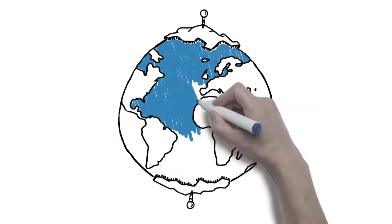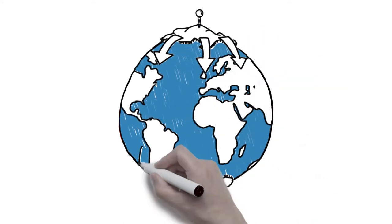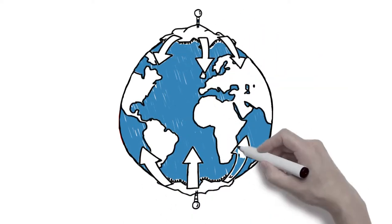What happens at the poles doesn't stay at the poles. It affects the entire globe. And the reality is the poles are changing fast.